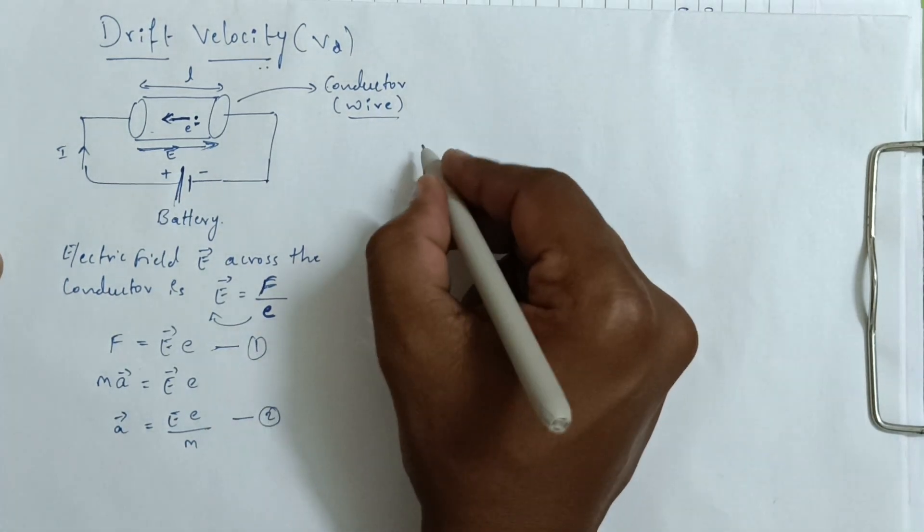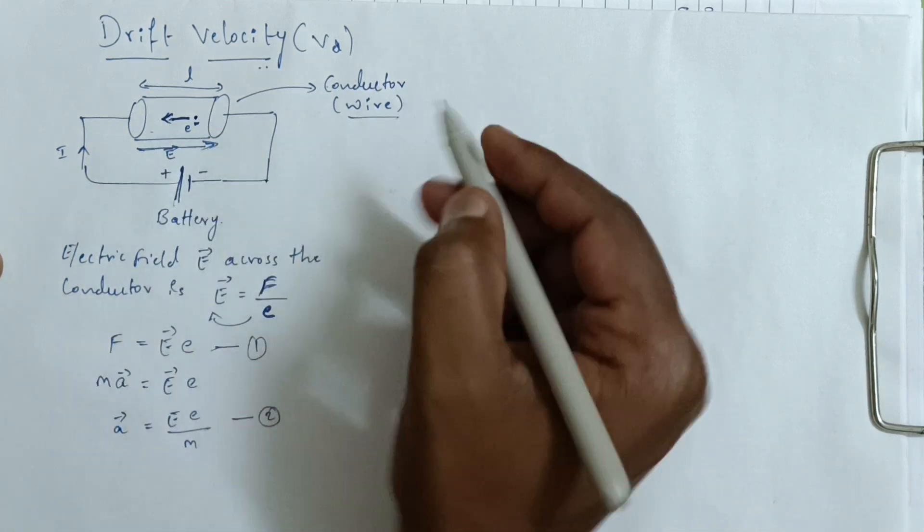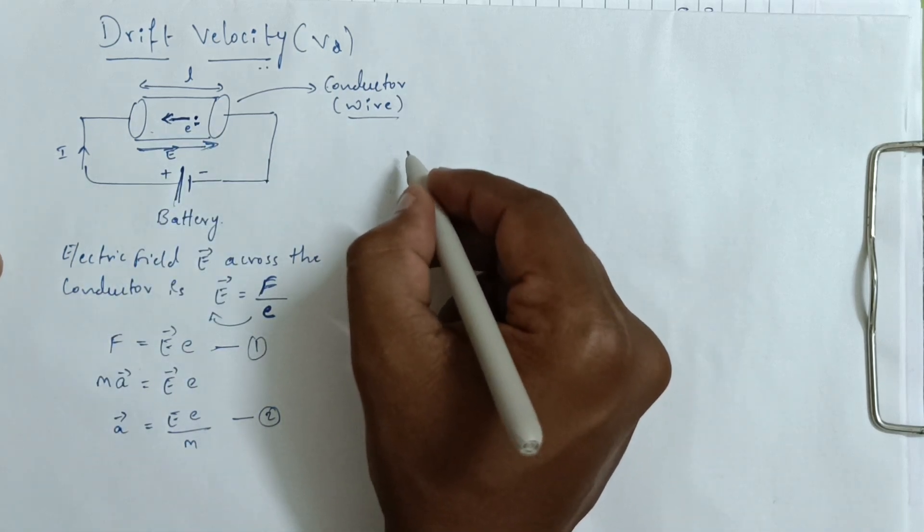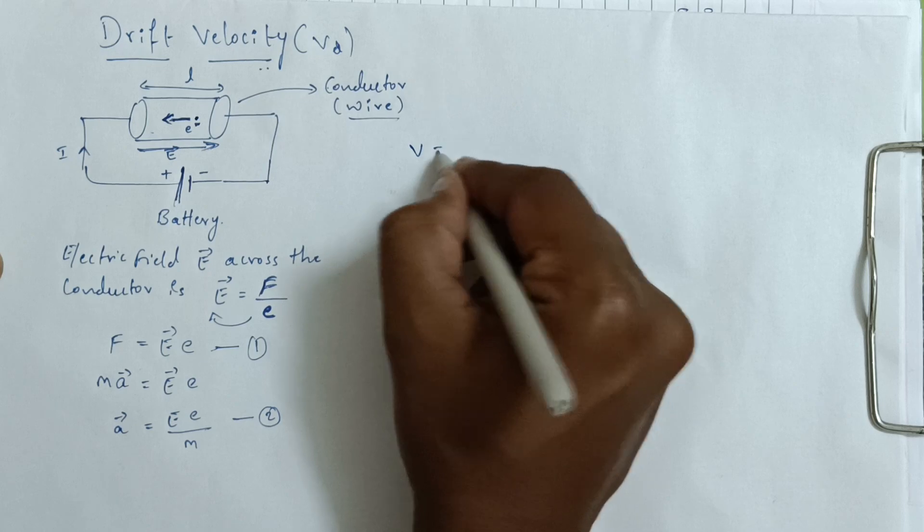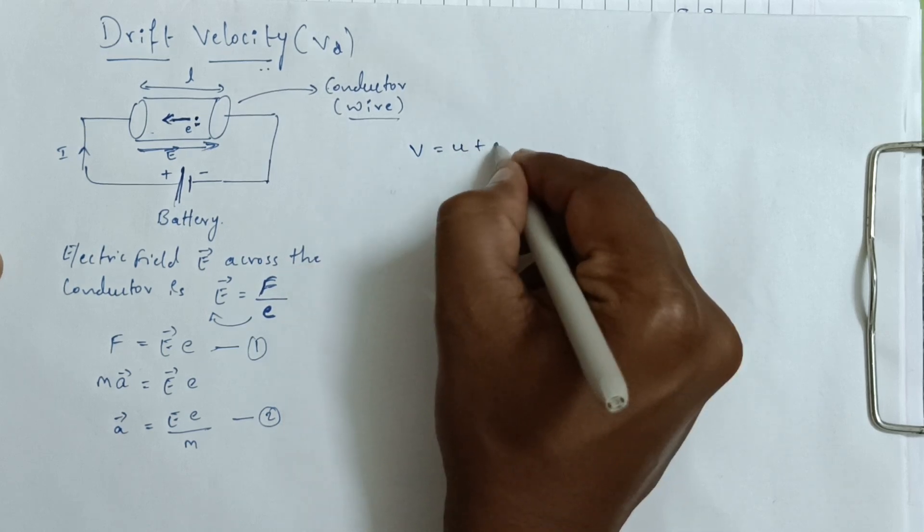Now these electrons are moving, meaning they will have certain velocities. Hence from kinematic equation which you have studied in first PUC, V equals U plus AT.